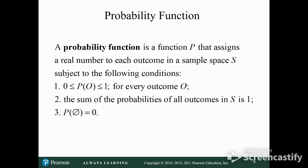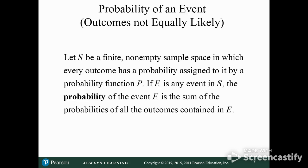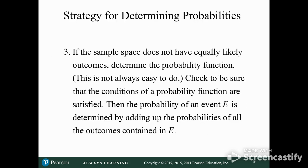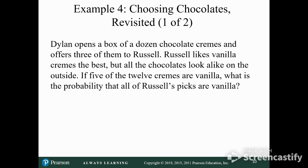The probability function assigns a real number to it, and the probability will always be between 0 and 1. So if it happens in all outcomes, it's a 1. If it doesn't happen, it's a 0.